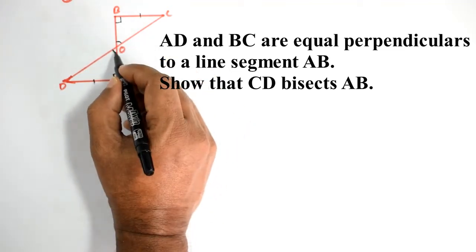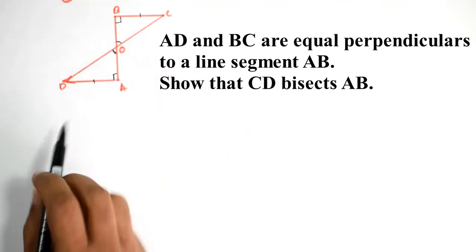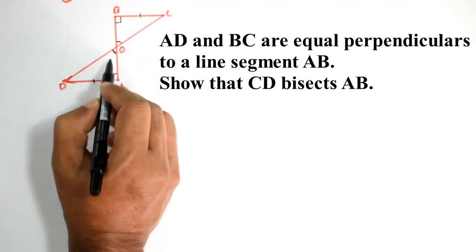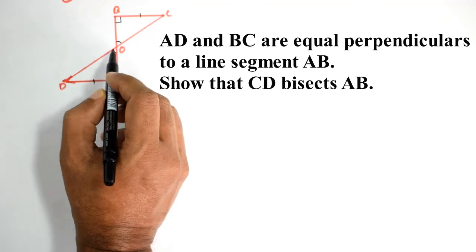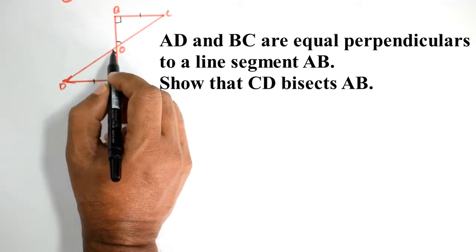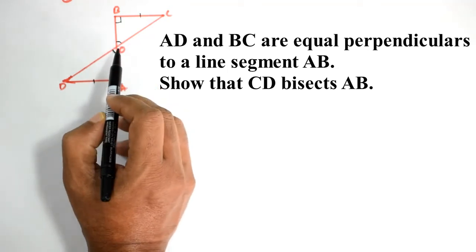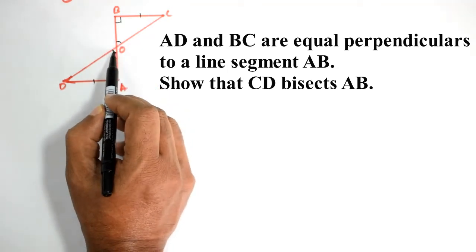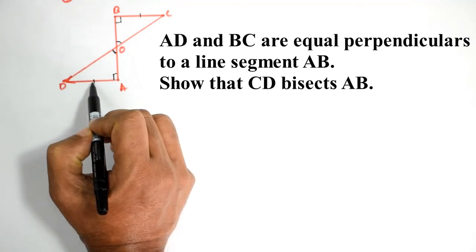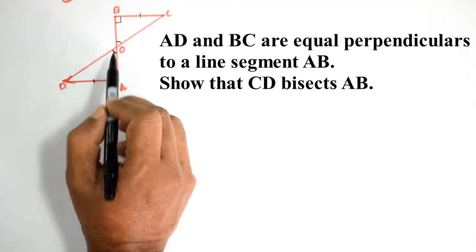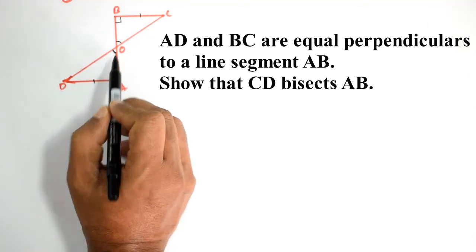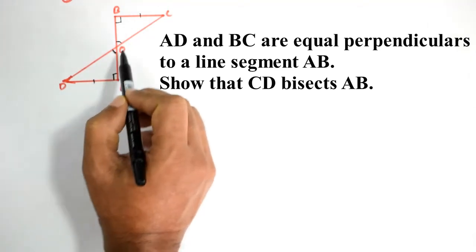Vertically Opposite Angles are equal. Angle, Side, Angle — ASA.